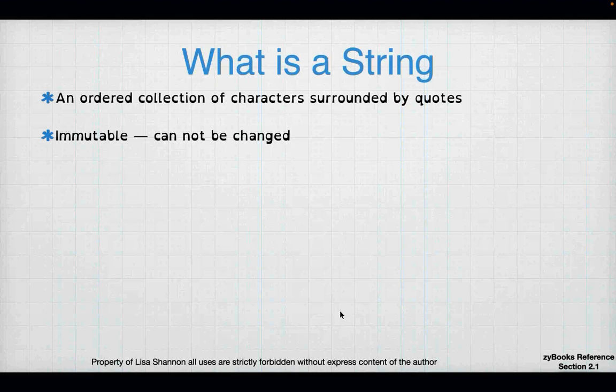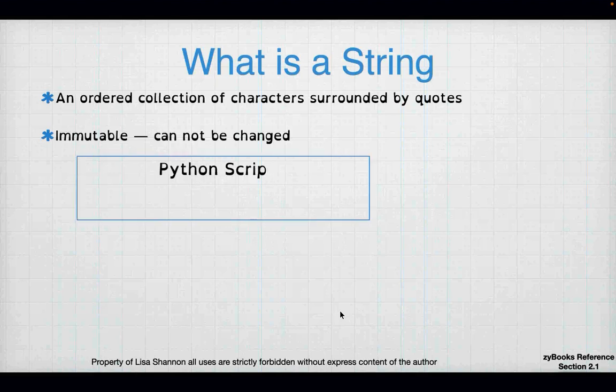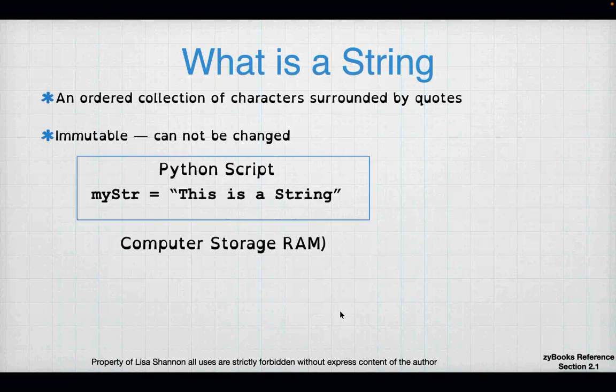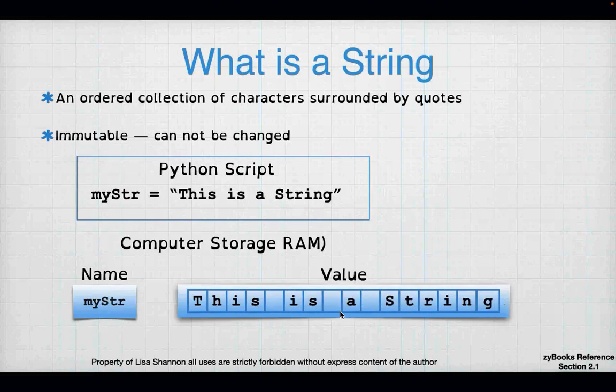What's a string? A string is an ordered collection of characters surrounded by quotes. That is it — that is all a string is. A string is immutable, which means it may not be changed. You cannot alter a string.